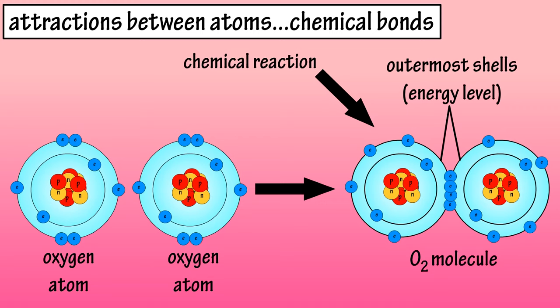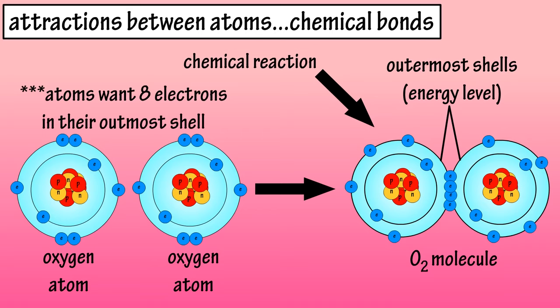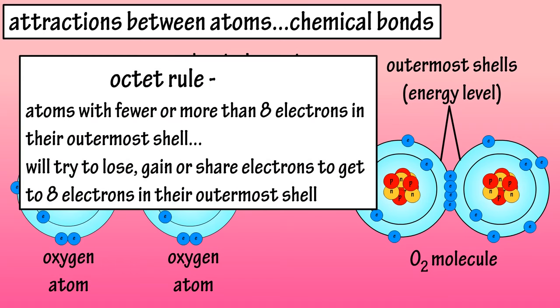In atoms that have fewer or more than 8 electrons in their outermost energy level, reactions occur that result in the loss, gain, or sharing of electrons with another atom to satisfy the octet rule. The octet rule means that elements tend to combine so that each atom has 8 electrons in its outermost shell. This results in the formation of structures such as crystals or molecules.